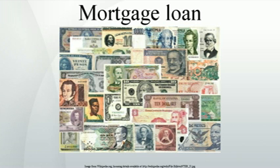Some lenders may also require a potential borrower to have one or more months of reserve assets available. In other words, the borrower may be required to show the availability of enough assets to pay for the housing costs — including mortgage, taxes, etc. — for a period of time in the event of job loss or other loss of income. Many countries have lower requirements for certain borrowers, or no-doc/low-doc lending standards that may be acceptable under certain circumstances.